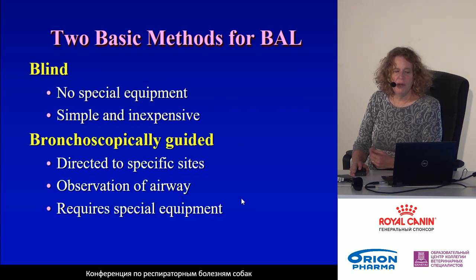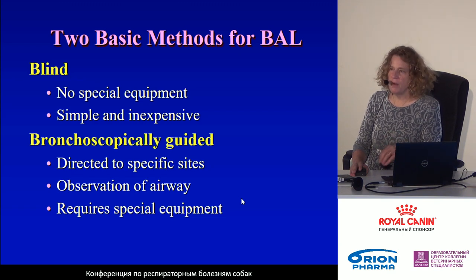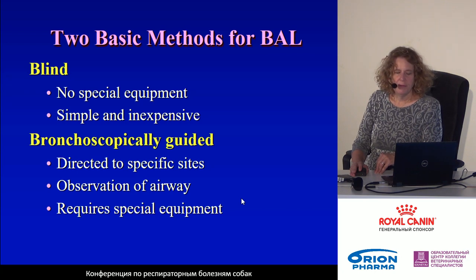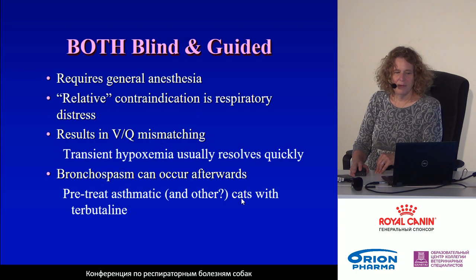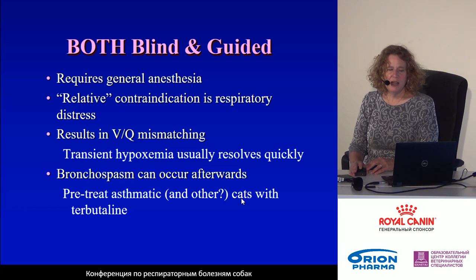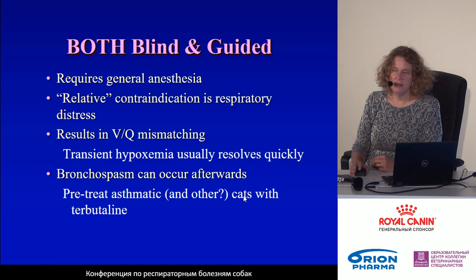There are two basic methods: blind BAL and bronchoscopically guided BAL. If we know that the lesion is localized to one specific area, the preference should be for bronchoscopically guided BAL. So we choose between the two techniques based on whether we know exactly where the lesion is located. If the localization is known, bronchoscopy is of course preferable.